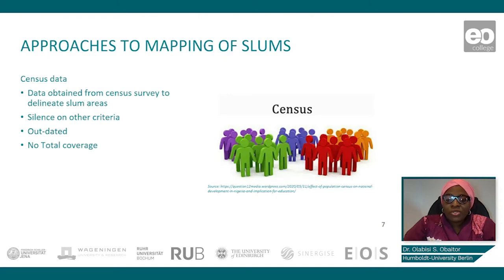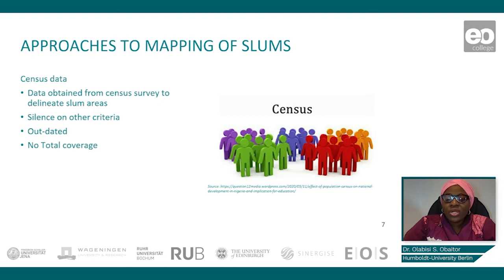While this approach is usually considered the best approach, it has also been criticized because of its silence on some of the criteria used to describe slums, such as facilities available in the community. Furthermore, many countries do not have recent data for each enumeration area, and when they do, it is usually not reliable enough to use in mapping slums.